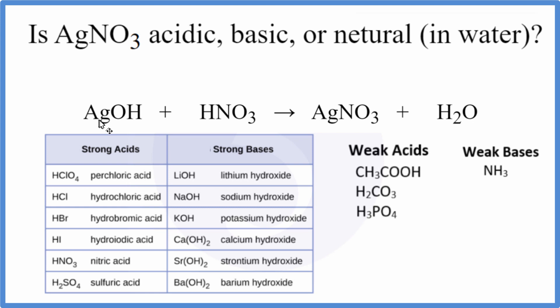So we're going to look for silver hydroxide here on our table, and looking down here, we see it's not listed as a strong base. That means it's going to be a weak base. So let's put WB to remember that.